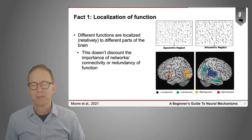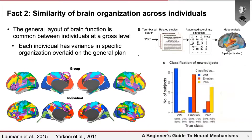It turns out that localization is also relatively similar across individuals — there's a general layout of brain function that seems common between individuals, at least at a gross level, though each individual has variants overlaid on that general plan. This is shown by resting-state functional connectivity data: in a group of more than 100 people, regions that commonly move together are color-coded. Individual data from my own brain collected over a year and a half shows the general plan is the same, but some regions function differently than expected from the group.